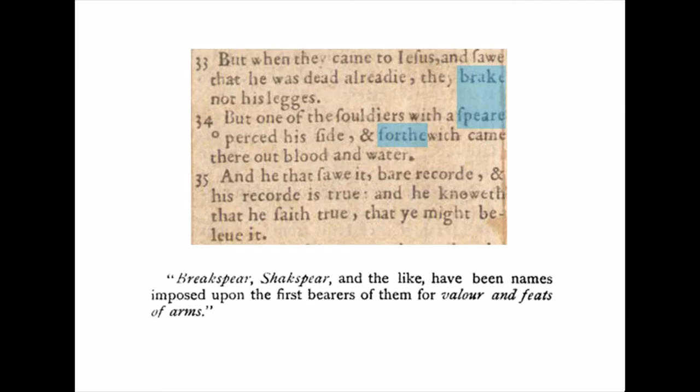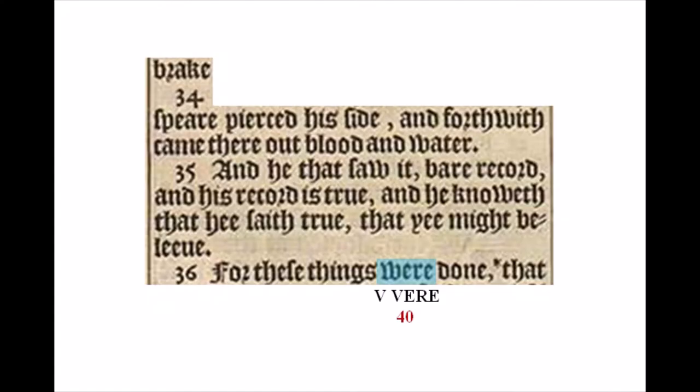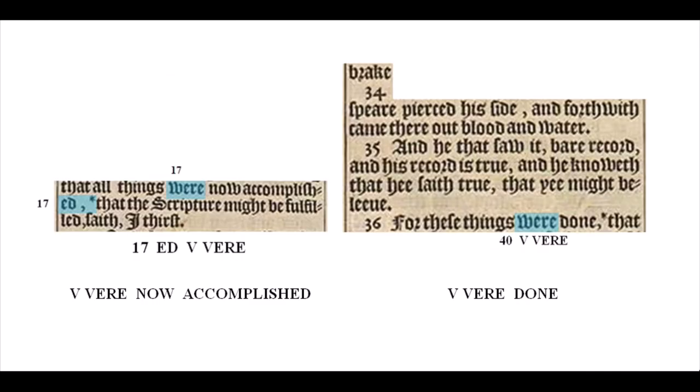Edward de Vere was tournament champion in the tiltyard at Whitehall Palace in 1571 and 1581 — one of the main objectives in jousting being to break a lance or spear on the opponent. Maybe 'break spear' also alludes to Oxford's skill in the lists. Counting the words beginning with 'break' and going directly to 'spear,' the fortieth word is 'were' — or V-V-E-R-E — and the word after 'were' is 'done,' similar to 'now accomplished' following the 17/ed/V-Vere code on line 17.